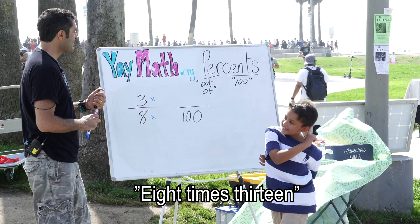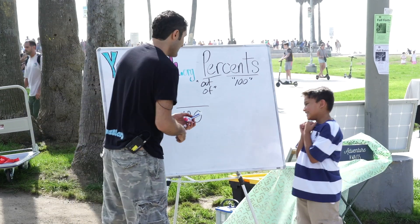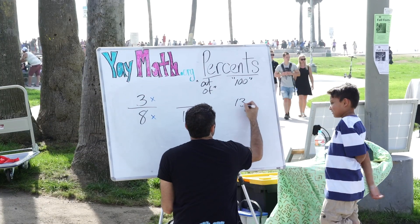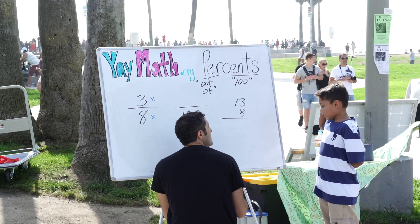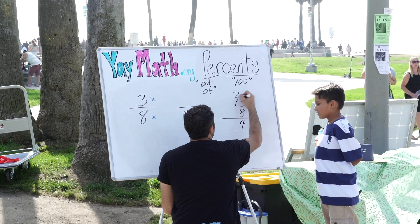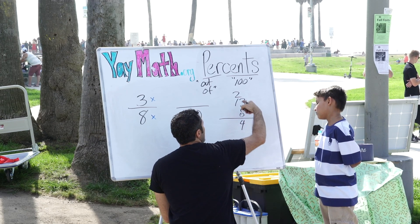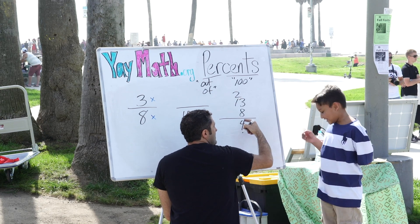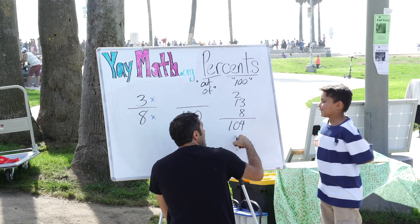Eight times 13? Let's find out — can we find out together? So eight times 13: what's three times eight? Eight times eight is 24. 24 is right — four, two goes here, and then one times eight is eight.